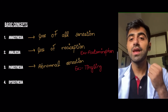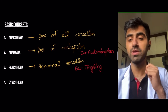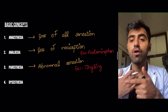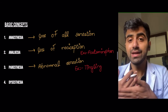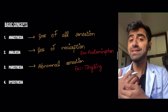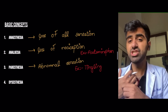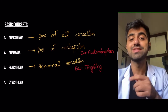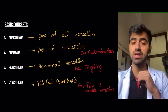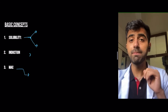Paresthesia is an abnormal sensation that should not be present. For example, if you feel something touching the back of your hand when it's not actually there, that's a paresthesia. If you feel a painful abnormal sensation — like something pinching the back of your hand — that becomes a dysesthesia, which is a painful paresthesia. An example is the pins and needles sensation common in diabetic neuropathy.